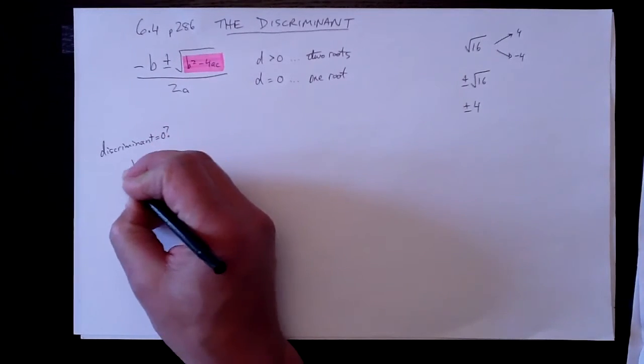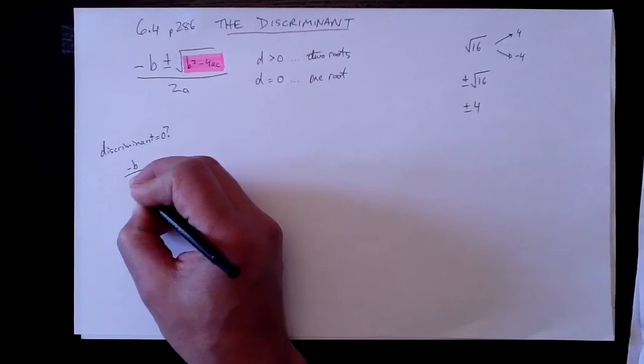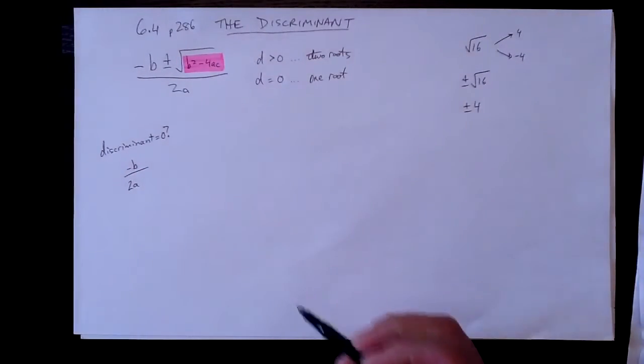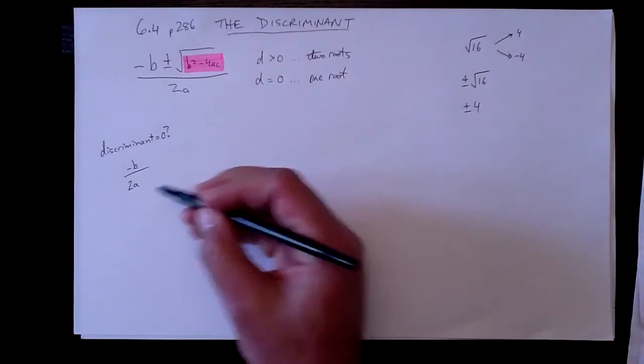Then what we're left with, that's all that we're left with, minus b over 2a, that's what we're left with of the quadratic formula when the discriminant equals zero. And that's why there would just be one root.